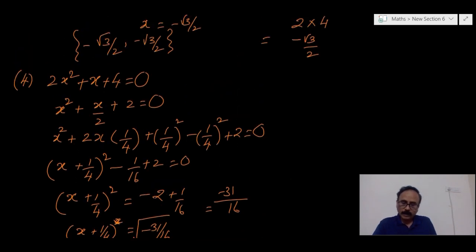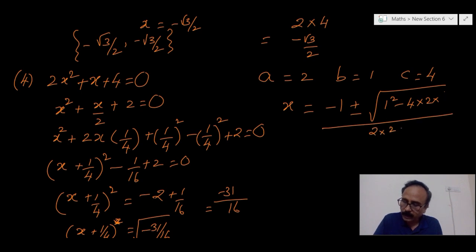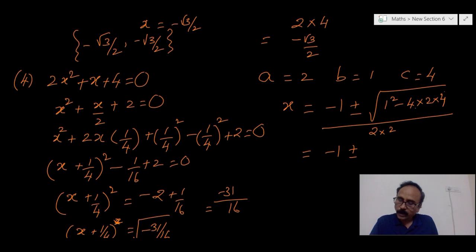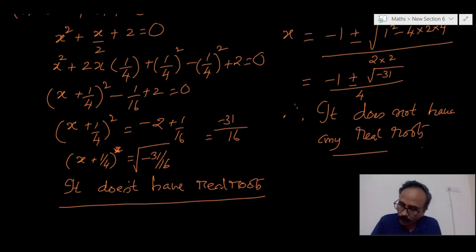Examining the same by formula method: a equals 2, b equals 1, c equals 4. Substituting, x equals (minus 1 plus or minus root(1 minus 4 times 2 times 4)) / (2 times 2), which gives minus 1 plus or minus root(minus 31) by 4. This also does not have any real roots. So for the first and second questions done simultaneously, in either of the two methods the answers are the same.